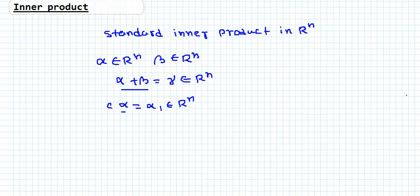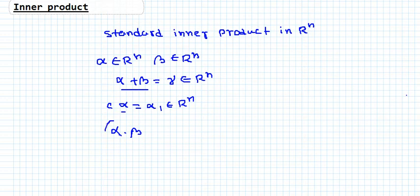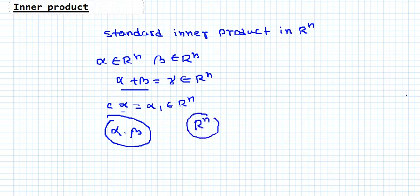Till now we know how to add vectors and how to multiply a vector by a scalar. Now you may ask: what will happen if we multiply two vectors? What is the meaning of the product of two vectors alpha and beta? We do not yet have the answer. Here we are going to define what the multiplication of two vectors means. Because we are doing the product inside Rn, that is why it is called the inner product, and we are only going to talk about the standard inner product in Rn, which is on your syllabus.